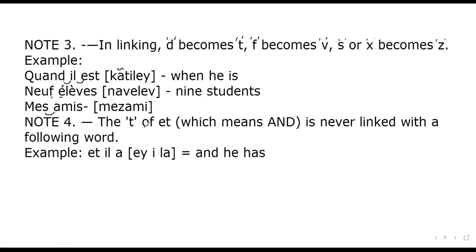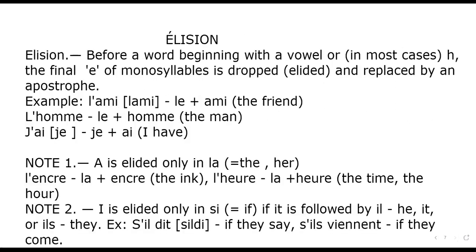Note four: the t of et, which means 'and', is never linked with a following word. For example, et il — we cannot say 'é-tila'; we must say 'é-il'. Next topic: elision. Before a word beginning with a vowel or in most cases h, the final e of monosyllables is dropped or elided and replaced by an apostrophe. For example: l'ami instead of le ami, meaning 'the friend'.